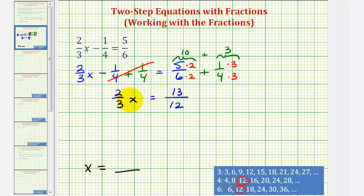So now we have two-thirds times x equals thirteen-twelfths. We might be thinking that we should divide by two-thirds, but remember, instead of dividing by a fraction, we normally multiply by the reciprocal. The reciprocal of two-thirds would be three-halves, so now we're going to multiply both sides of the equation by three-halves.